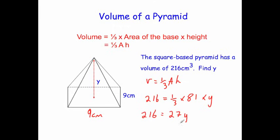We don't want 27 times y; we just want y. So we're going to divide both sides by 27, which gives us y = 216 ÷ 27 = 8. So the height of this pyramid is 8cm.